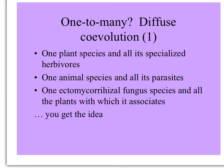One of the kinds of diffuse co-evolution is one-to-many. Examples include a certain plant species and all of the herbivores that eat it, one animal species and all of its different parasites — fleas, ticks, worms, etc. — or one ectomycorrhizal fungus species and all of the trees with which it associates.